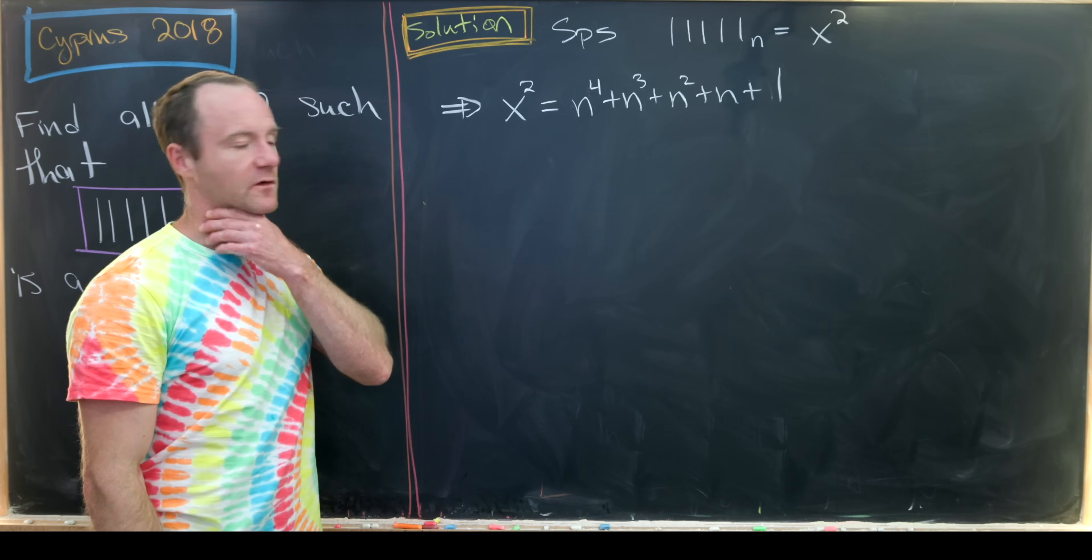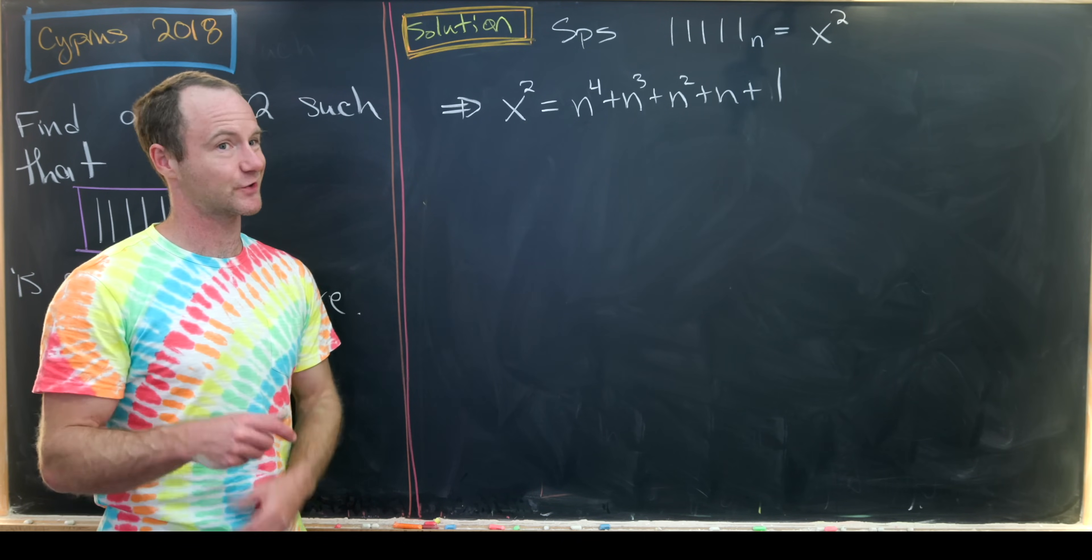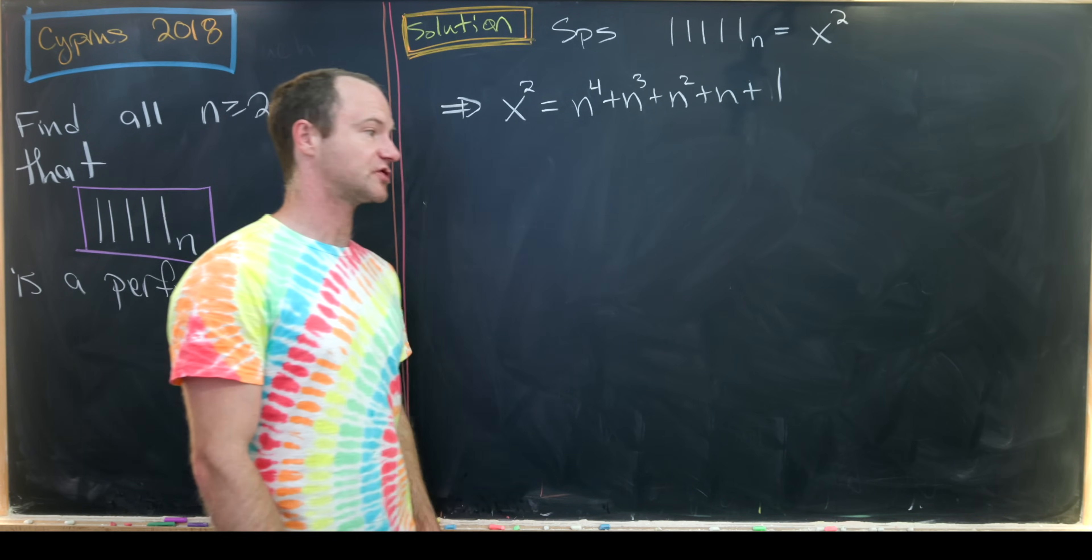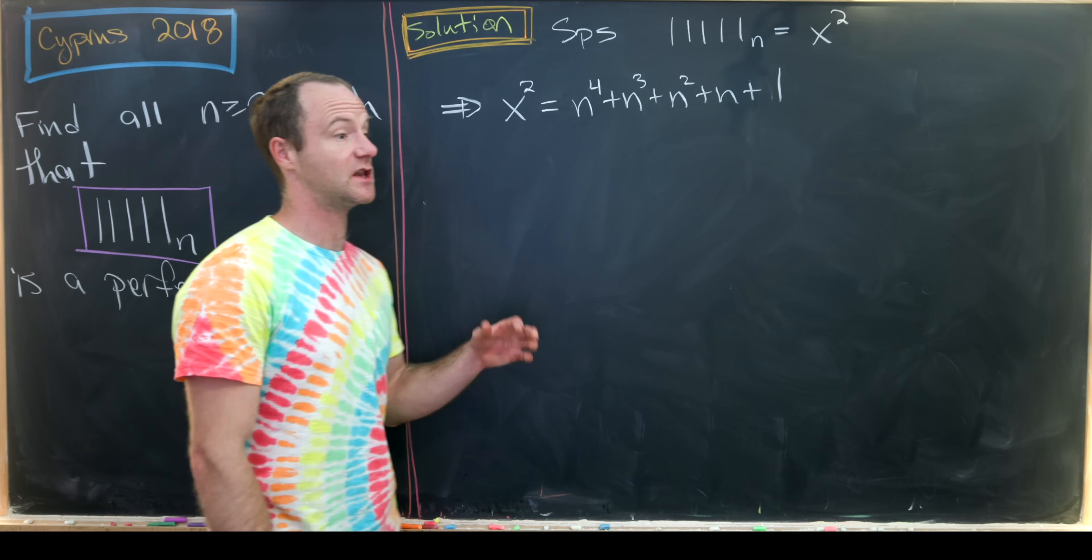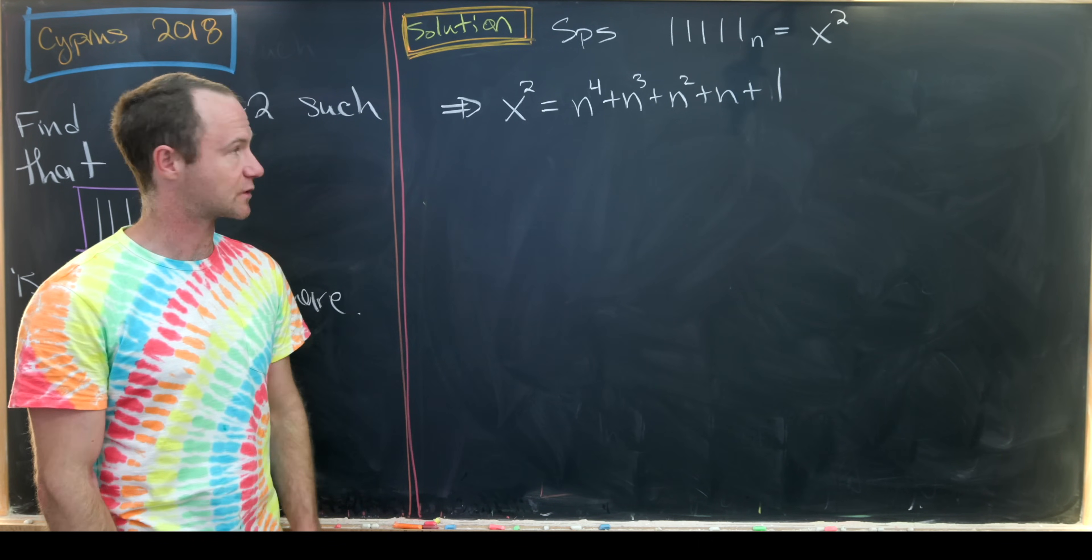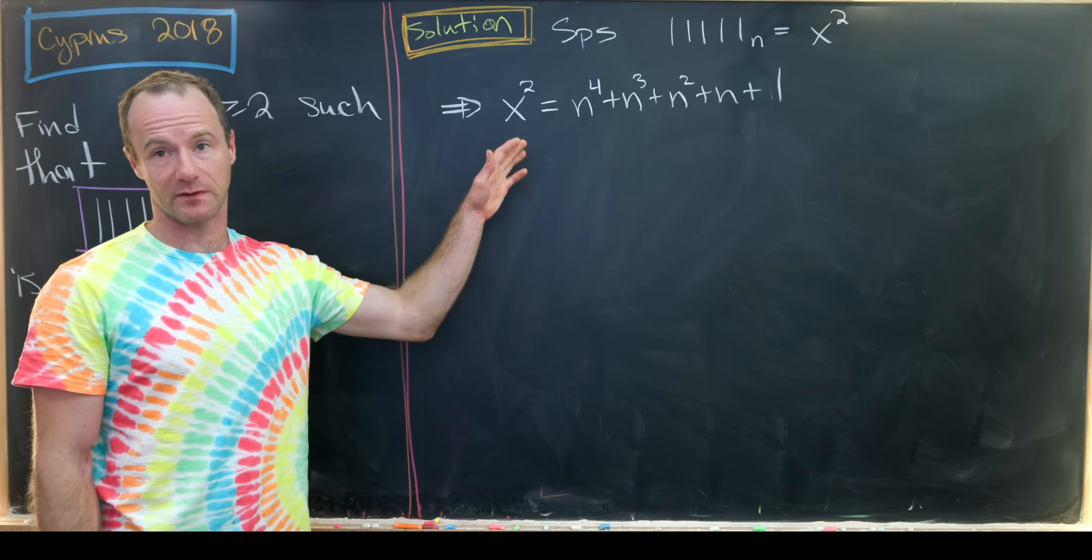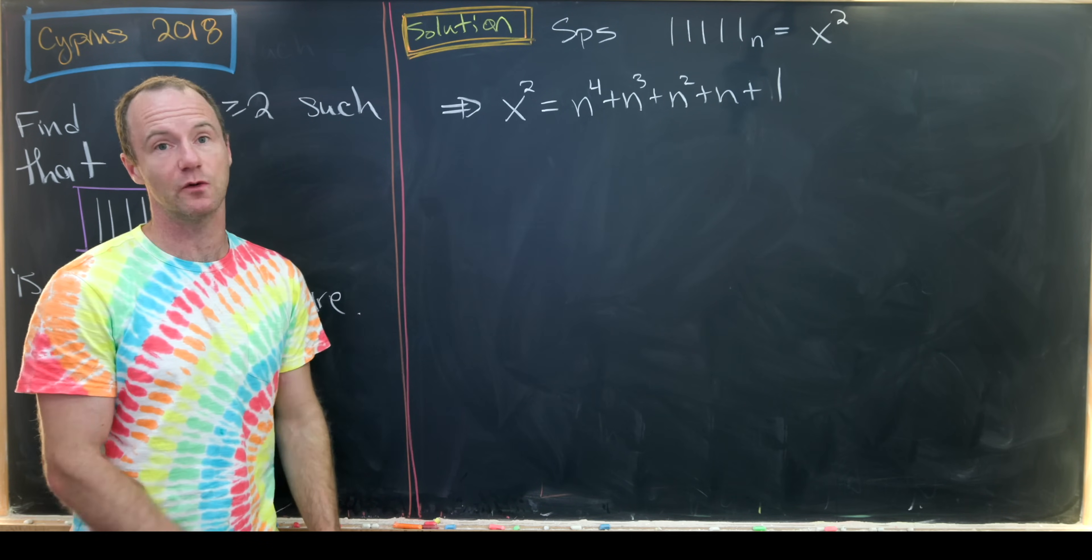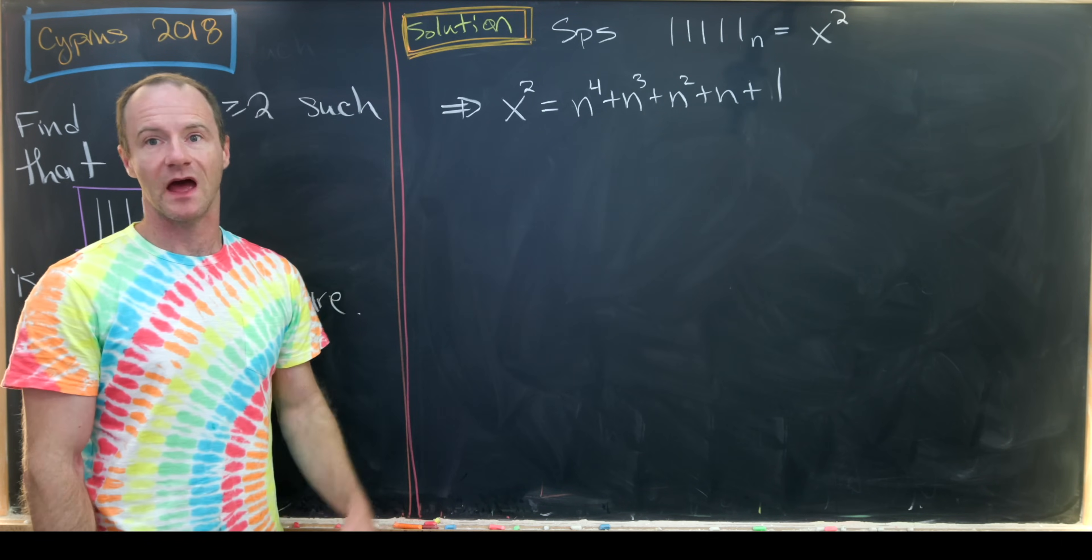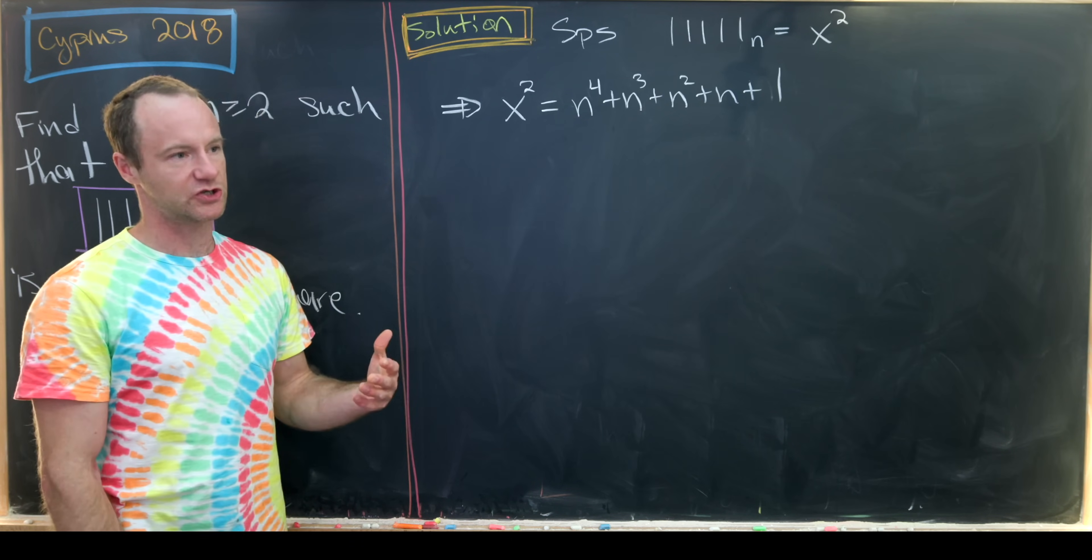Okay, so now where could we go from here? Well, generally when you're asked to find out when things are perfect squares, there's only going to be a few possible small solutions. And also the general strategy for showing something is not a perfect square is to bound it between two consecutive perfect squares. But it turns out that this n to the 4th plus n cubed plus blah blah blah term is a little bit hard to deal with because all the coefficients of these are the same and they're all equal to 1.